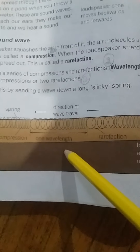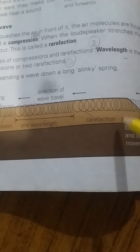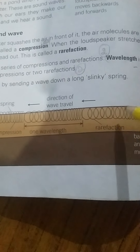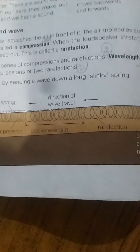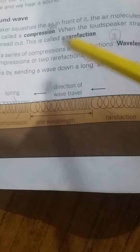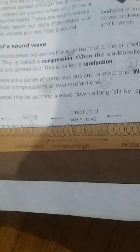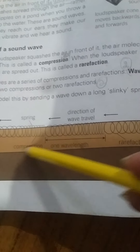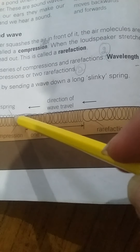The distance from a compression to the next rarefaction represents one wavelength. Here we have a slinky spring, and we are using this model to explain compression, rarefaction, and wavelength. Sound waves are longitudinal waves.